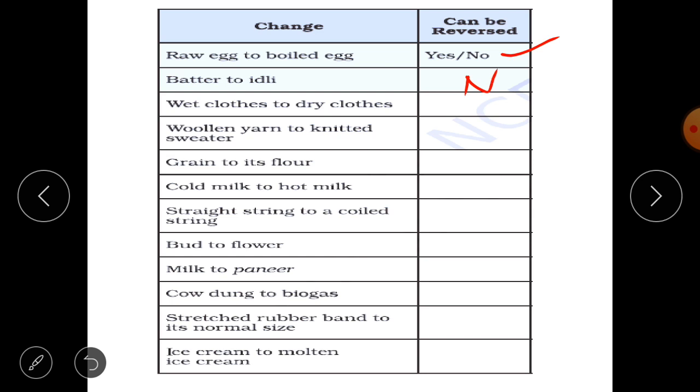Then wet cloth to dry cloth. This is a reversible change, just because you can again put water to those dry cloth and they will become wet. Woolen yarn to knitted sweater. This is also a reversible change. You have to just pull out a single thread and entire knitted sweater will turn into woolen yarn again. So yes.